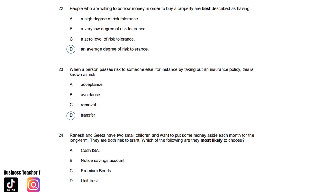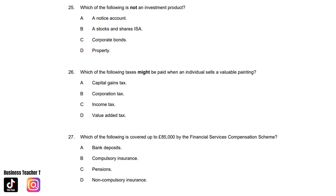Question twenty-four: Ranish and Geeta have two small children and want to put some money aside each month for the long term. They are both risk tolerant. Which of the following are they most likely to choose? A. Cash ISA. B. Notice savings account. C. Premium bonds. Or D. Unit trust. And the answer is D. Unit trust. Question twenty-five: Which of the following is not an investment product? A. A notice account. B. A stocks and shares ISA. C. Corporate bonds. Or D. Property. And the answer is A. A notice account.